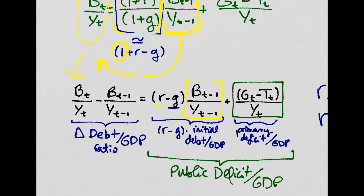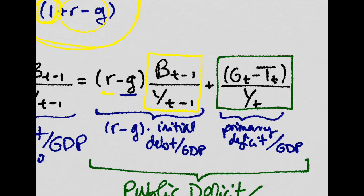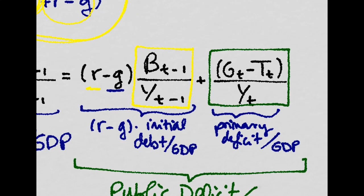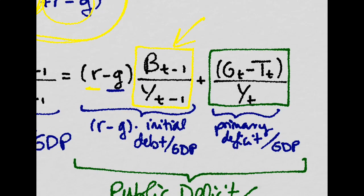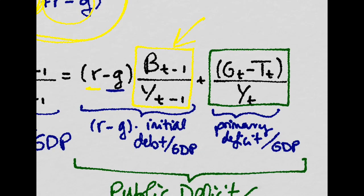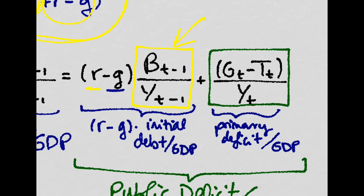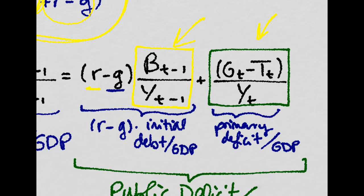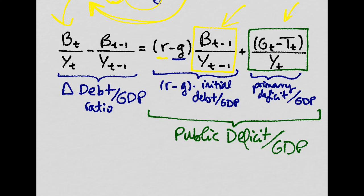And that will just be equal to R minus G times the initial level of debt to GDP, and then plus the primary deficit over GDP ratio at time T. And that whole expression is just the public deficit over GDP ratio. So this flow is equal to the change in the stock of debt to GDP ratio.